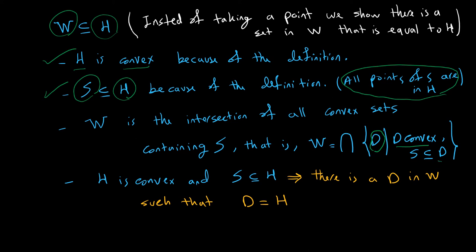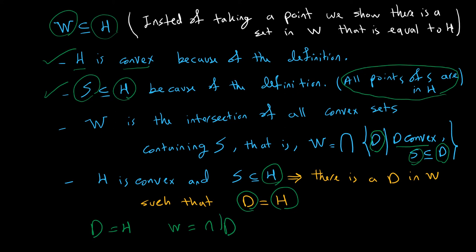Looking at that condition for any d set, you can see that H is like one of them — because H is convex and H contains S. Therefore there is a d set equal to H in the construction of W. Now, W is the intersection of all such d's that are convex and contain S. By taking the intersection, that set gets smaller and smaller, and it will definitely be contained in H. That shows the second inclusion W ⊆ H is true.